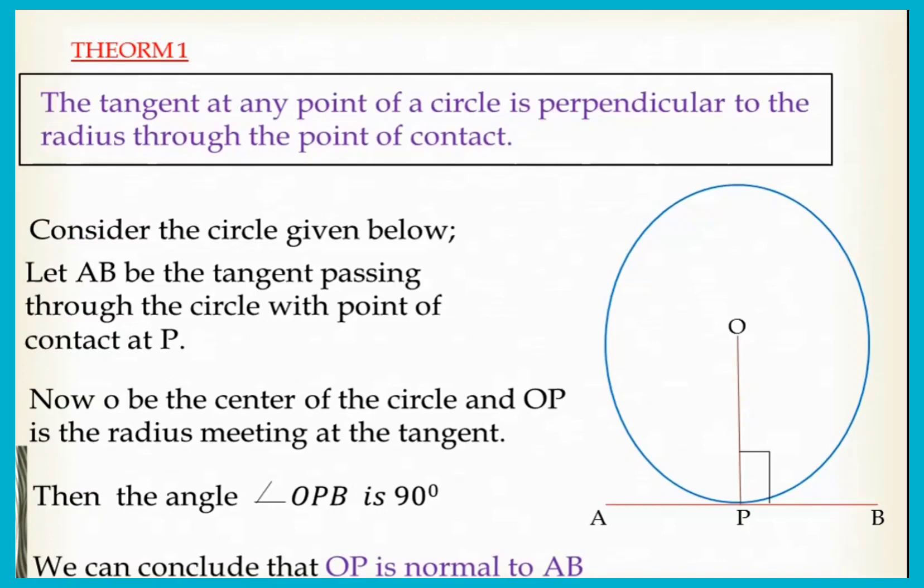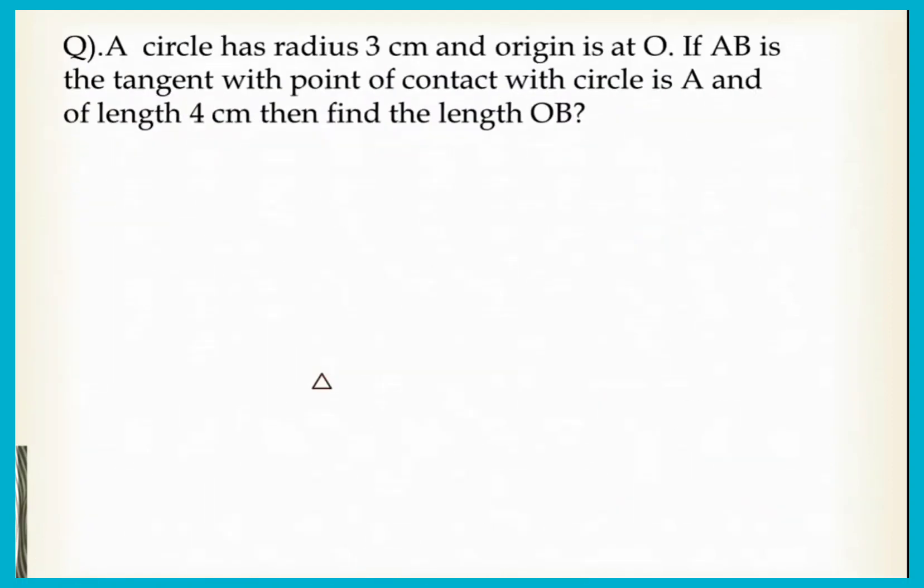Let us explain this theorem with an example. A circle has radius 3 cm and origin is at O. If AB is the tangent with the point of contact to the circle at A and length is 4 cm, find the length of OB. From the given data, we can understand that radius OA equals 3 cm and tangent AB equals 4 cm. Let us draw it.